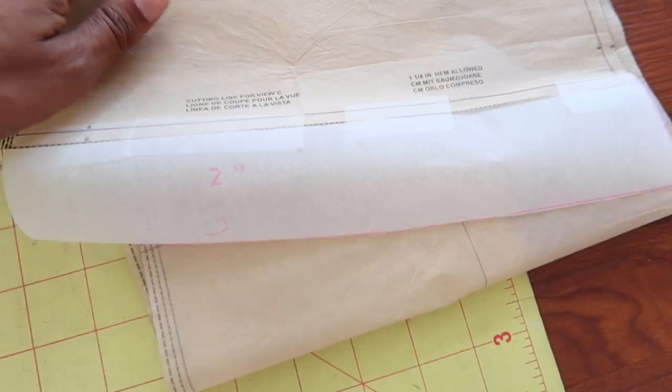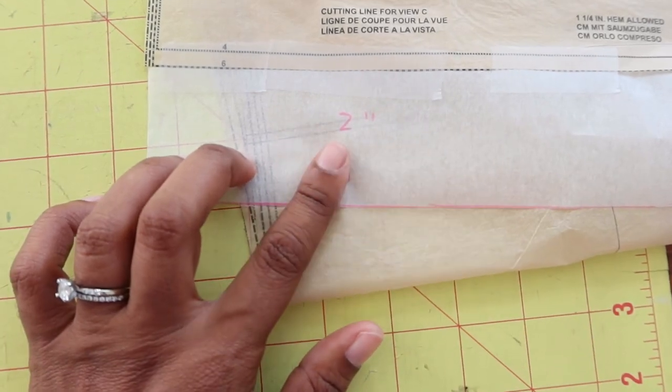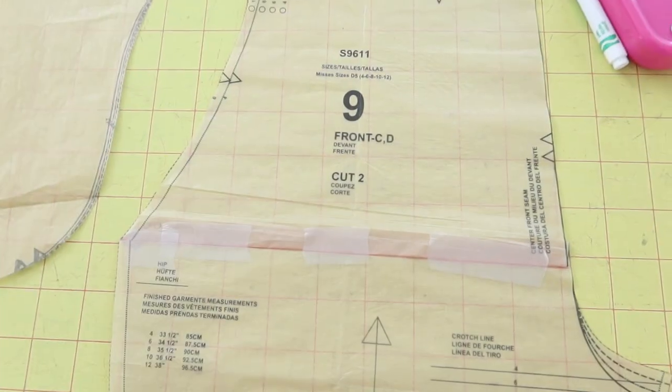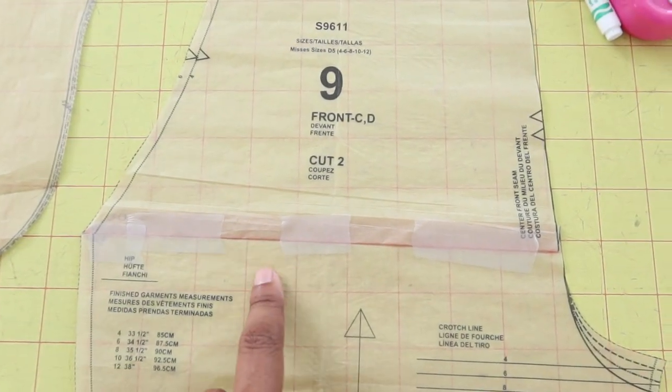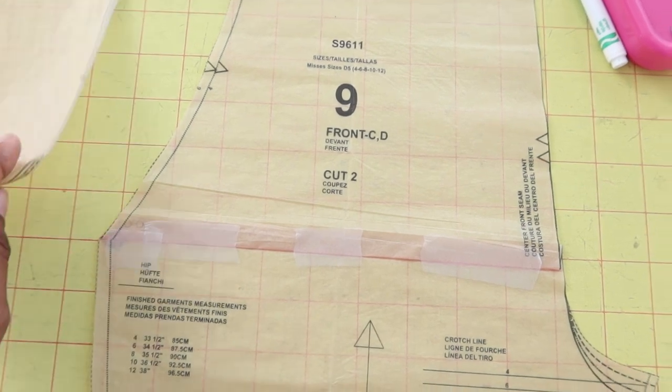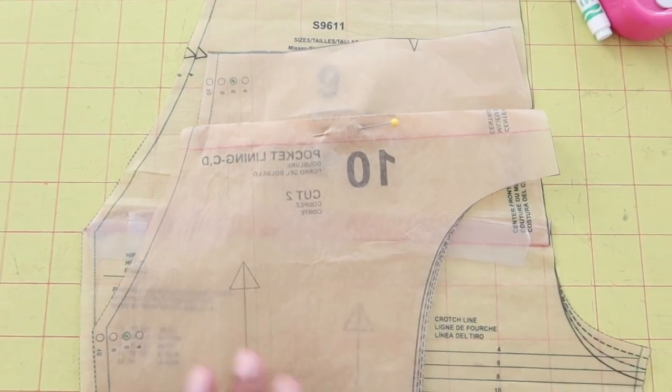The other thing I almost forgot is that I did decide to lengthen the pants by two inches. So usually when I adjust the front piece, I do need to make the same adjustment to the pocket piece. However...